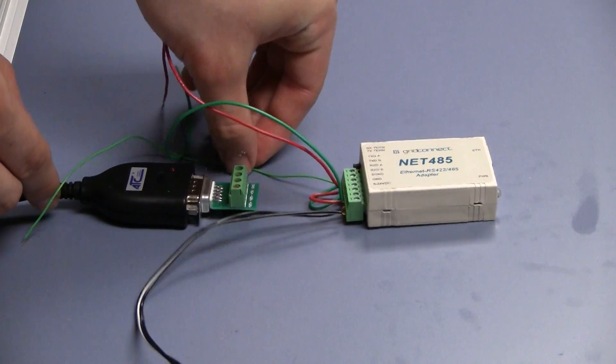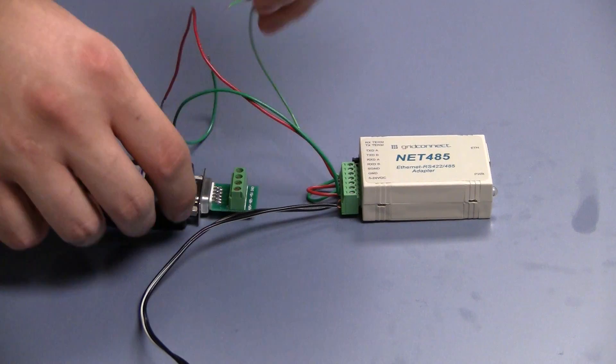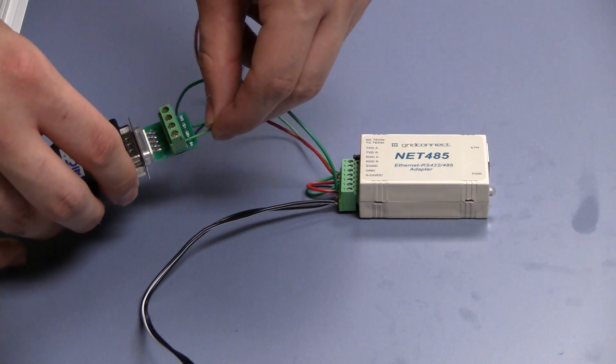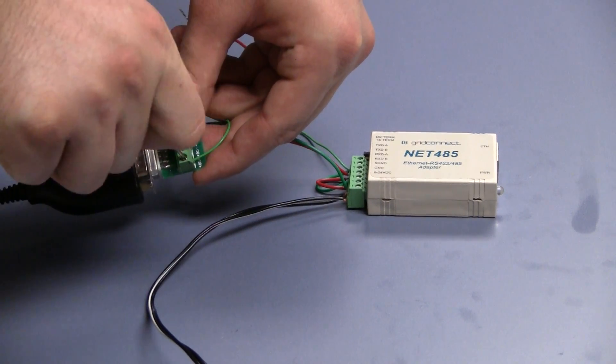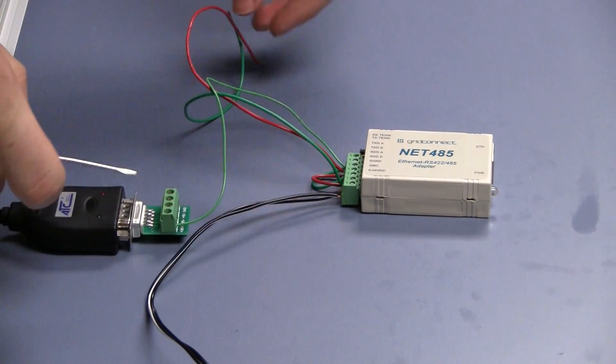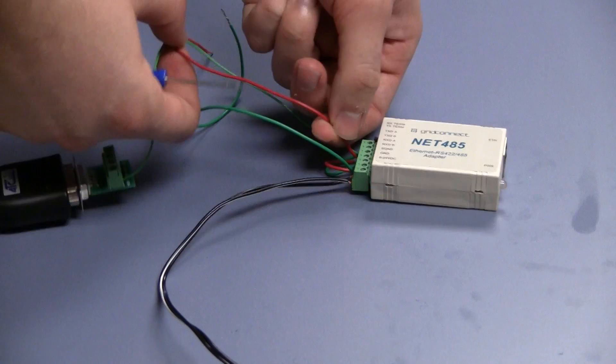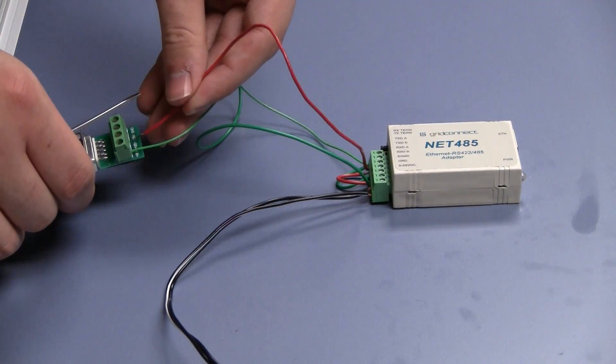So you want to wire our A side to your positive side and our B side to your negative side.